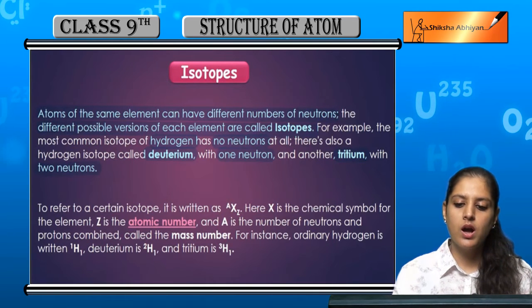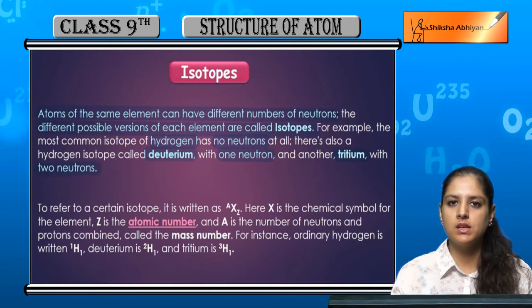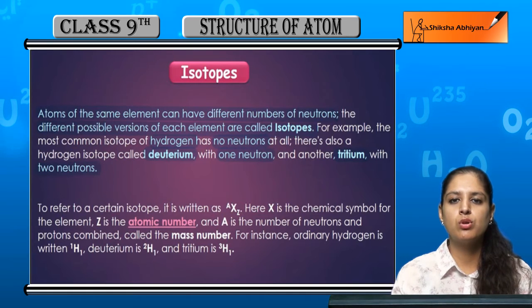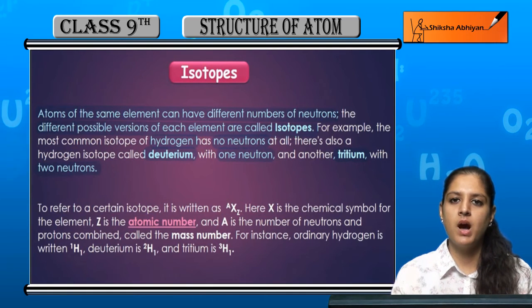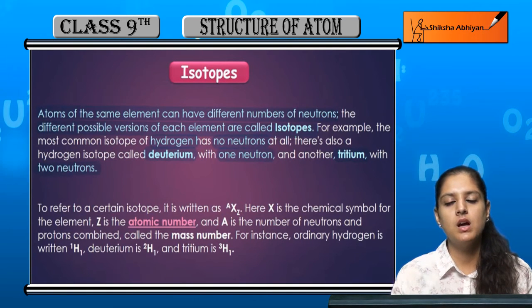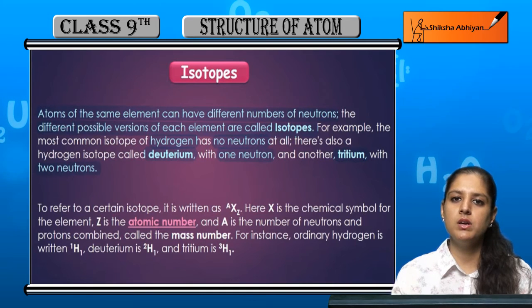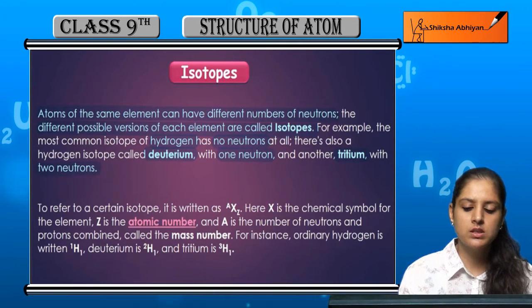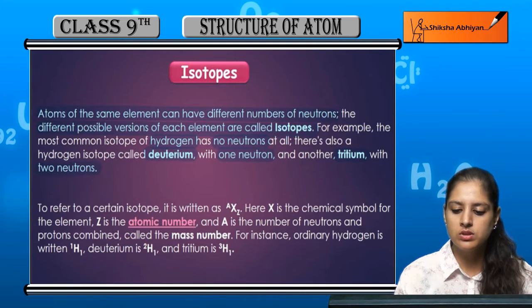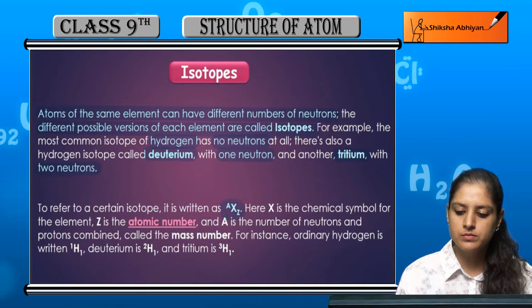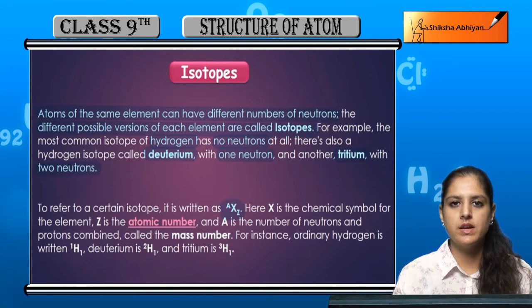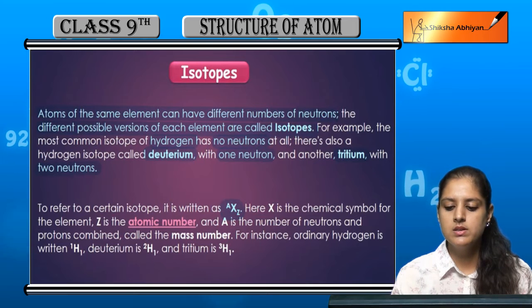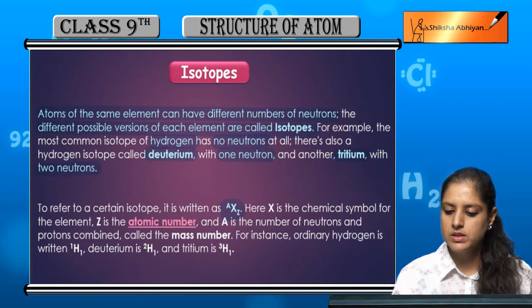So if we are talking about isotopes, the number of neutrons is different, that means the mass number is different, but the atomic number is the same. So to refer to a certain isotope, its symbol is AXZ, where A is the mass number and Z is the atomic number.